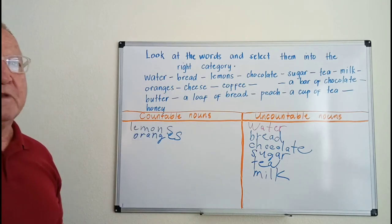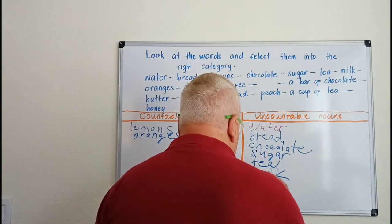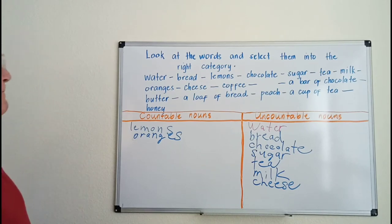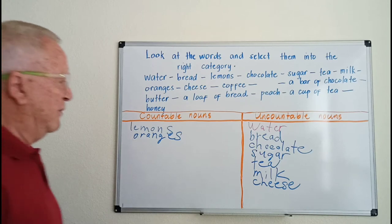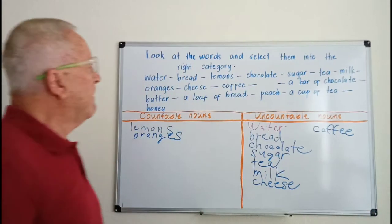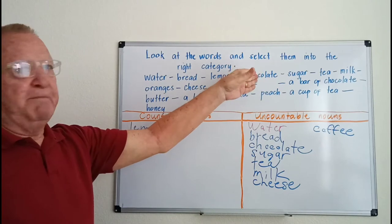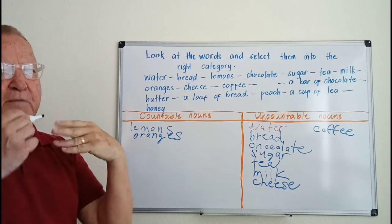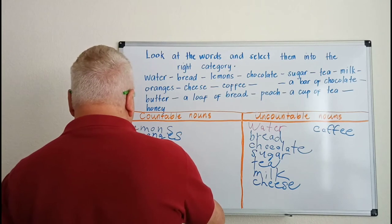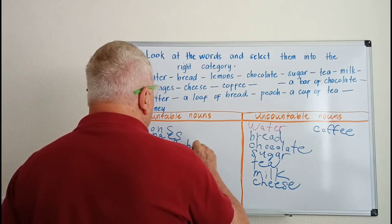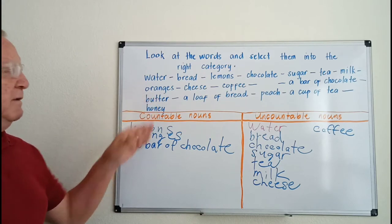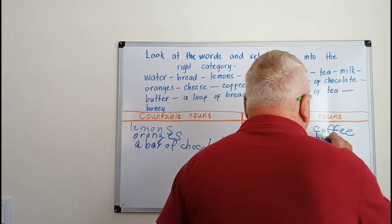Cheese is uncountable, but if we say 'a slice of cheese,' that makes it countable. Coffee is uncountable. A bar of chocolate — distinguished from chocolate itself — using 'of' makes it countable. Butter is uncountable.